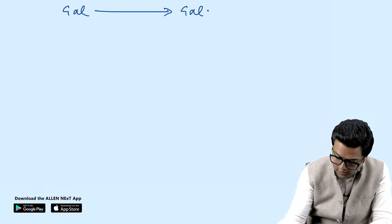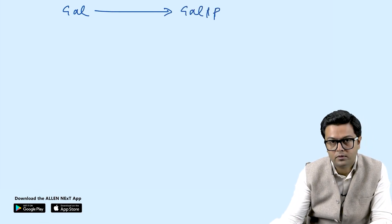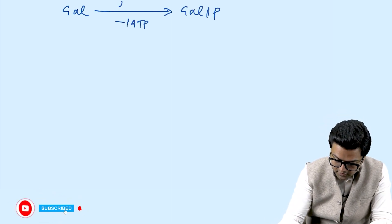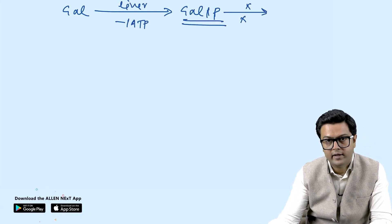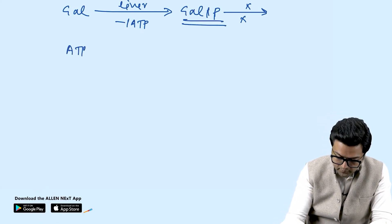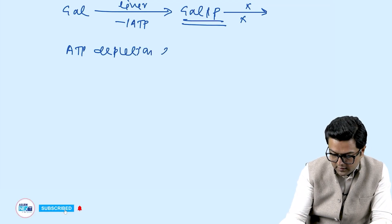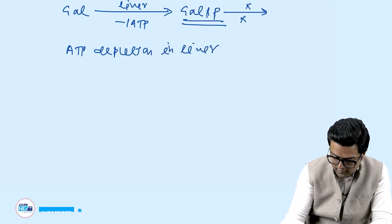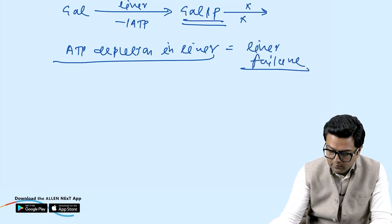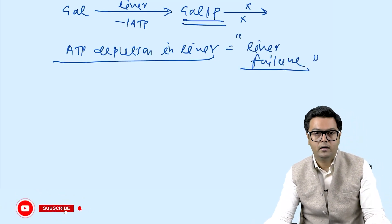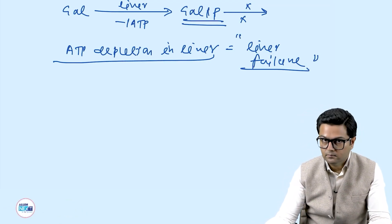Jaundice and hepatomegaly develop in galactosemia because galactose consumes one ATP to form galactose-1-phosphate in the liver, and the rest of the pathway is blocked. Galactose-1-phosphate accumulates, causing ATP depletion in the liver, which leads to liver failure and consequently jaundice.